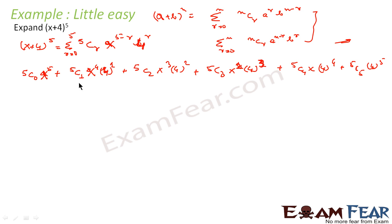To summarize the pattern: for x^(5−r), we get x^5, x^4, x^3, x^2, x^1, x^0 = 1 as r goes 0 through 5. For 4^r, we get 4^0 = 1, 4^1, 4^2, 4^3, 4^4, 4^5. That's how we have constructed this expansion.